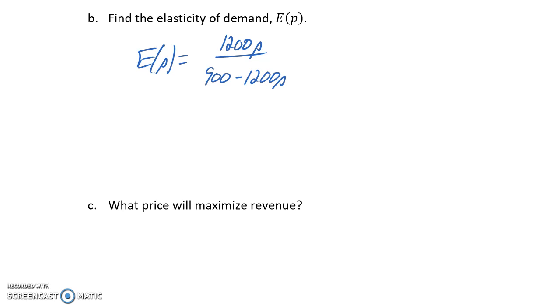We're asked what price will maximize revenue. This is a slightly different question than before. If we want to maximize revenue, we want a situation where increasing or decreasing price wouldn't affect revenue. That means we want demand to be unit, or E(p) = 1.